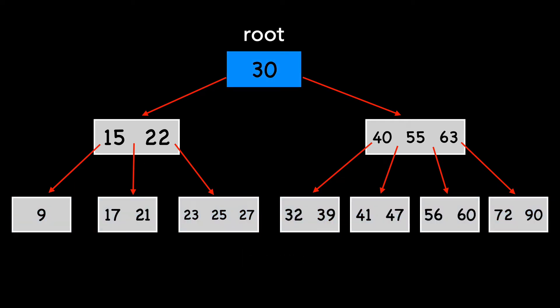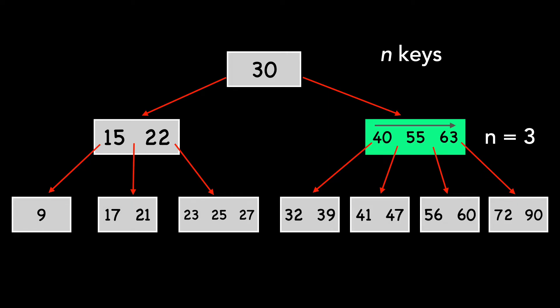Let's discuss B-tree characteristics. First, each node has N keys. The node highlighted here has three keys in it. As you can see, the keys are stored in increasing order. Internal nodes with N keys will have N plus 1 pointers to its children. Our highlighted node with three keys has four children.